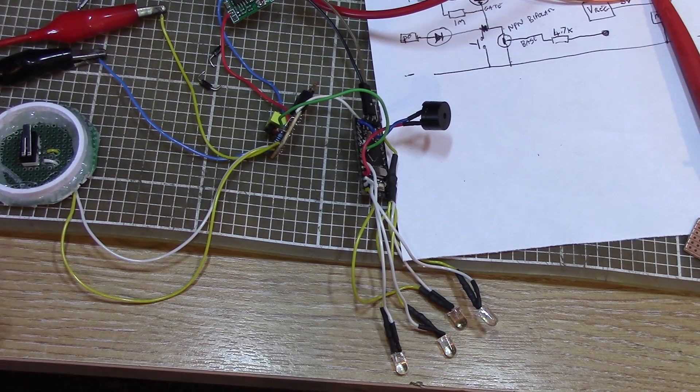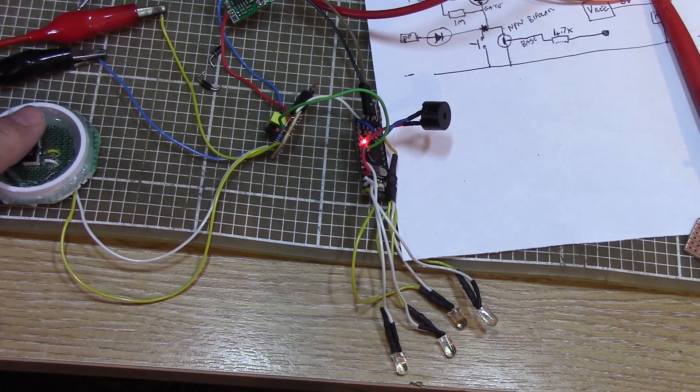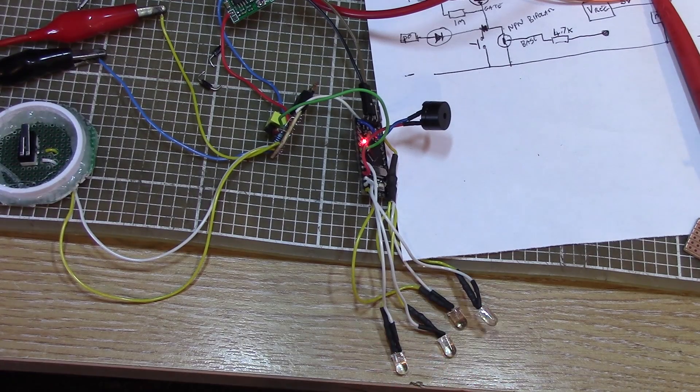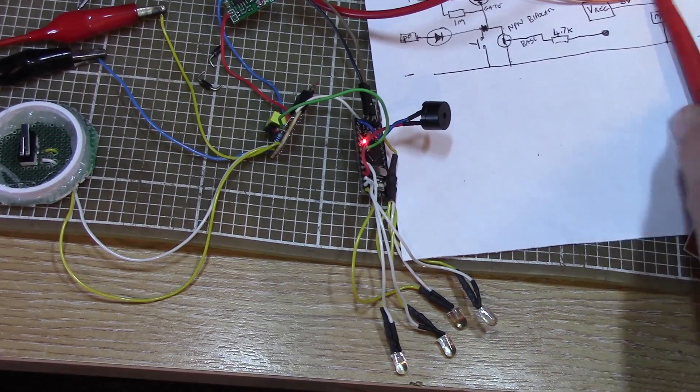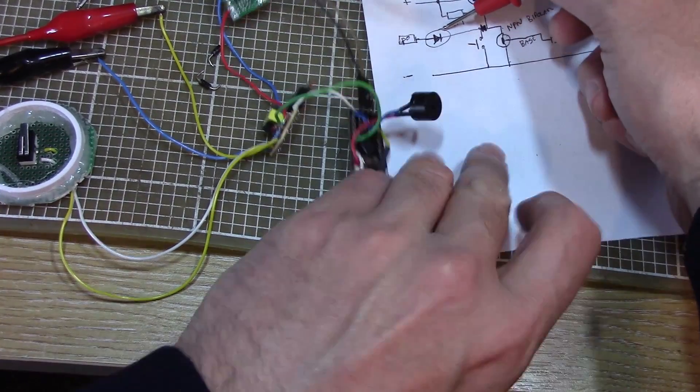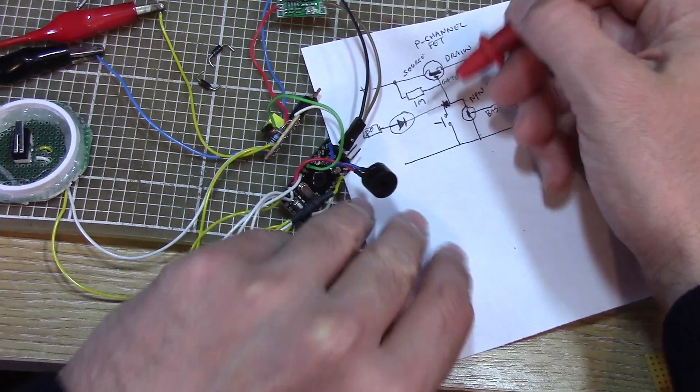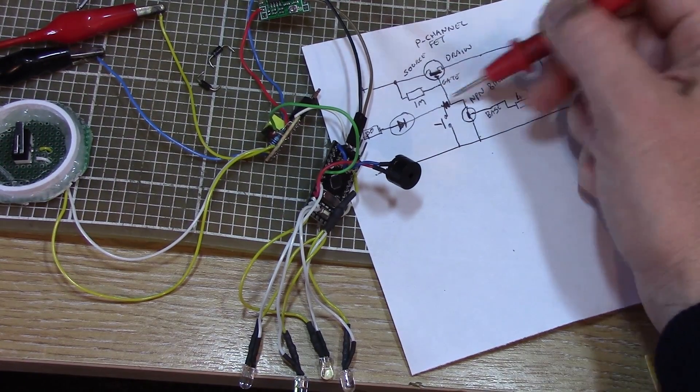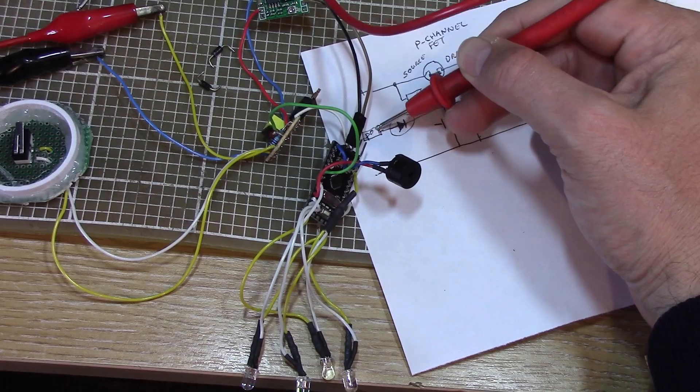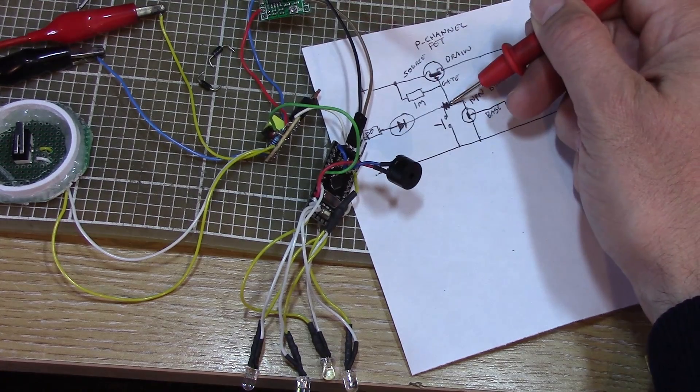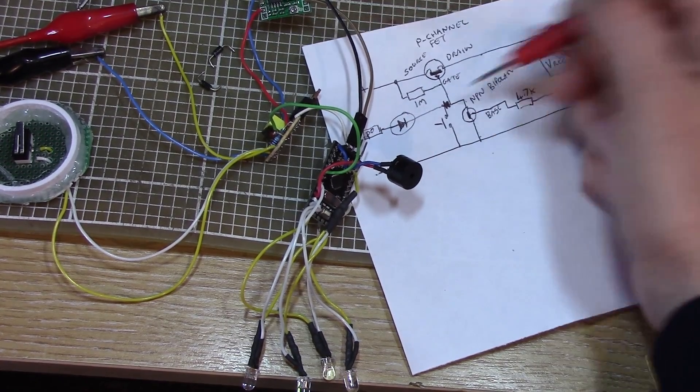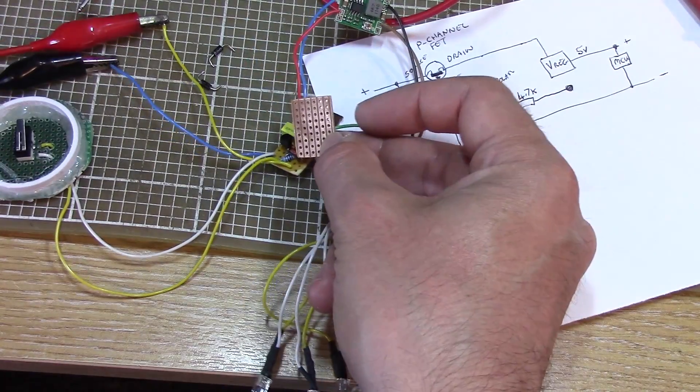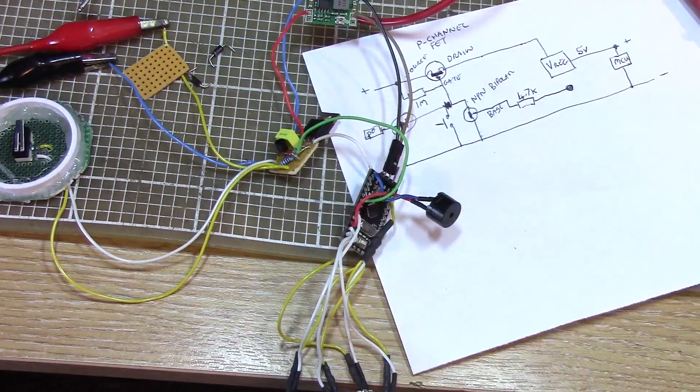So I've connected all the bits together, and I've made a bit of a schoolboy error on this. It works, it turns the power on and off. But my mistake was thinking I'd get away with one diode in here. And of course, when this transistor switched on, this point is basically connected to ground. So this input is always reading zero. So I need to add another diode into this circuit. So I'm going to have to rebuild it again on a slightly bigger bit of stripboard this time to make room for it. Back in a minute.